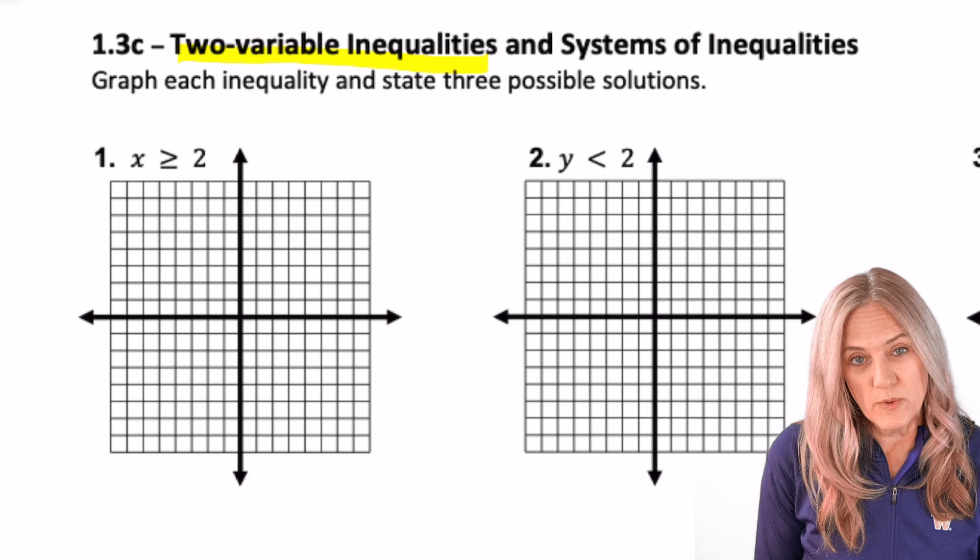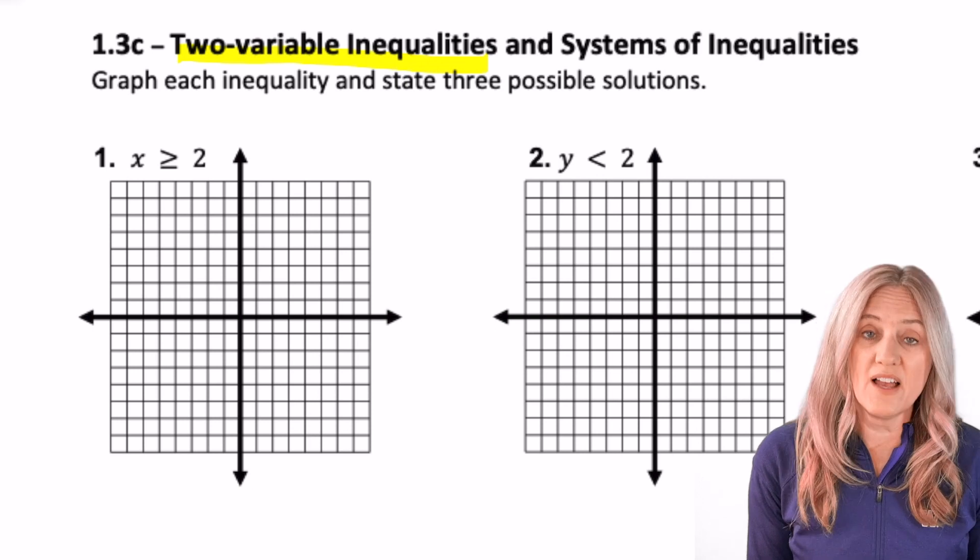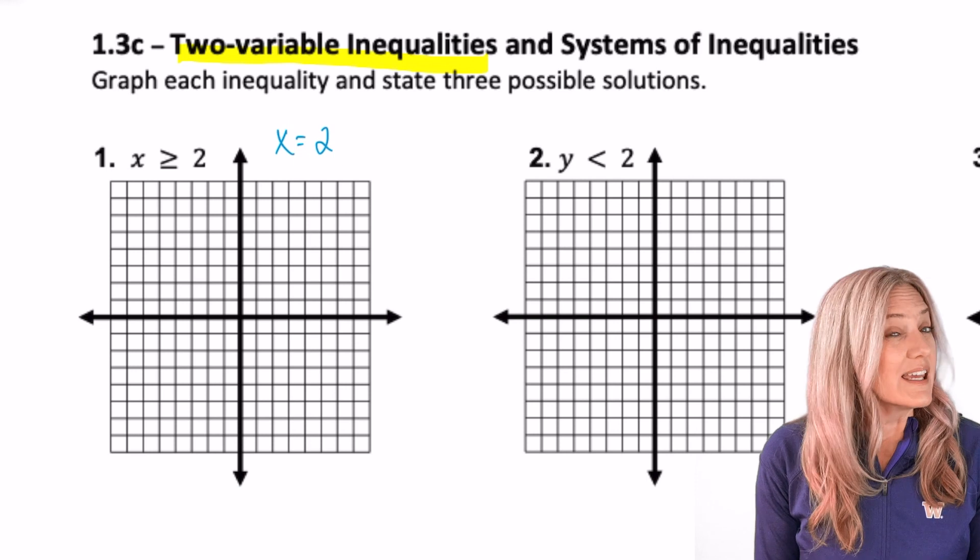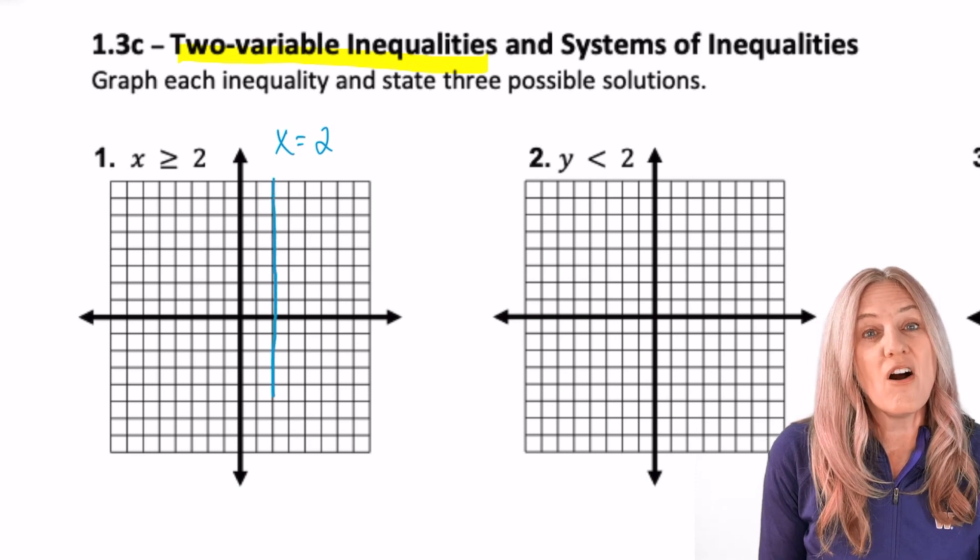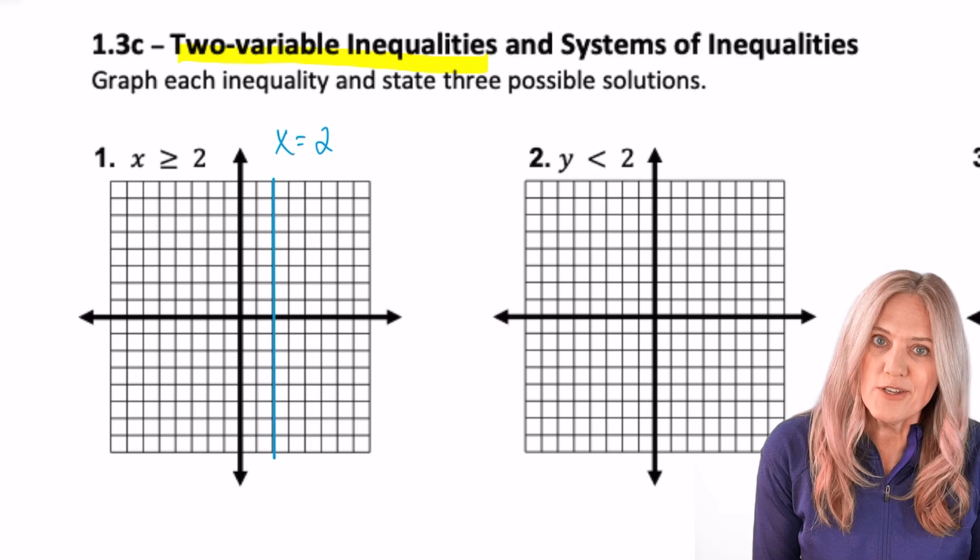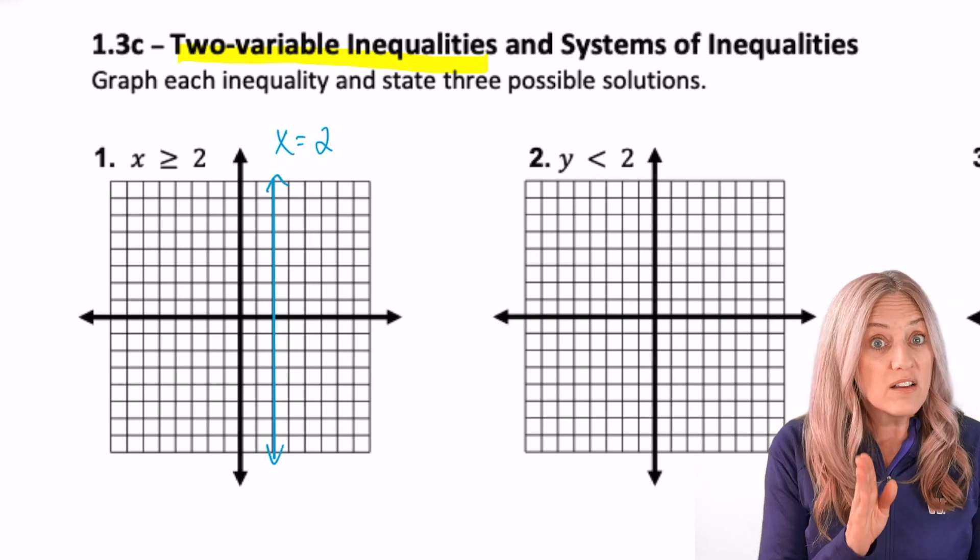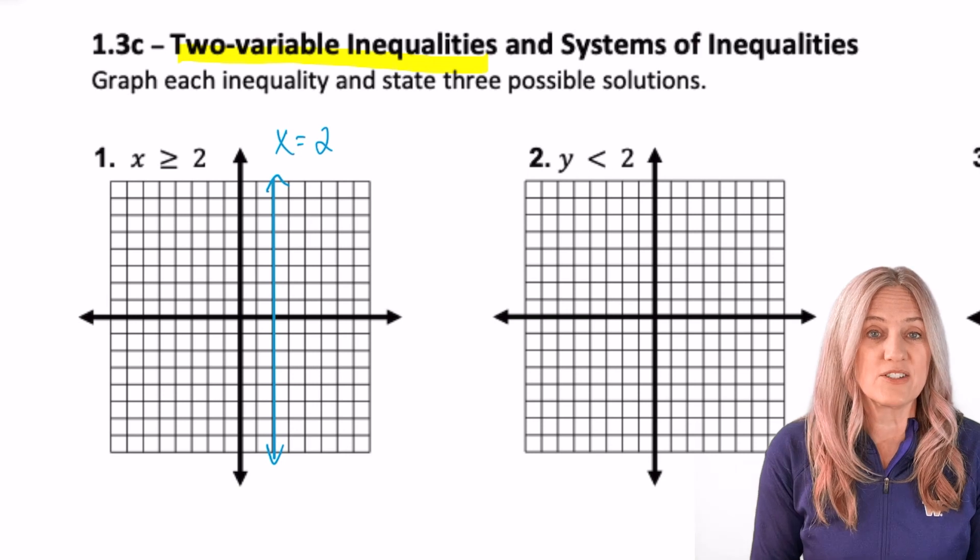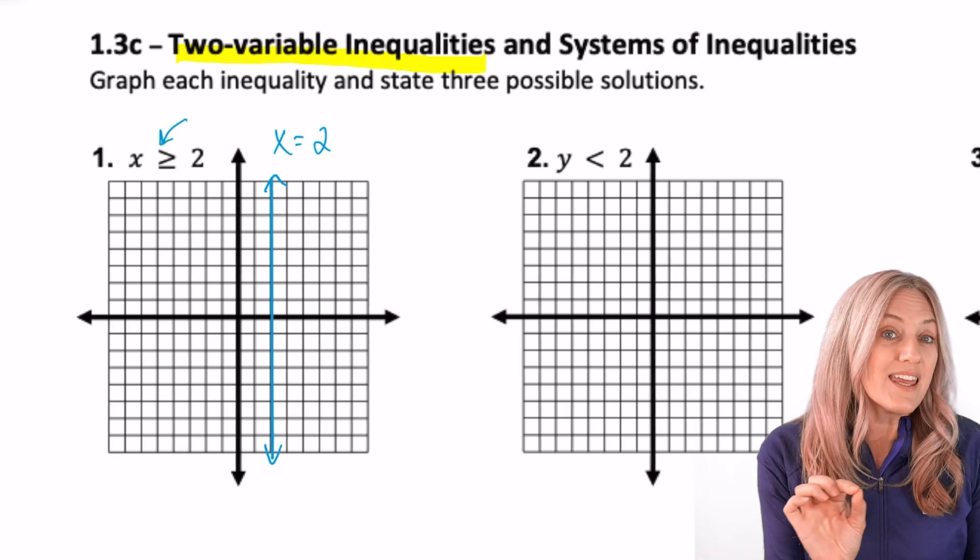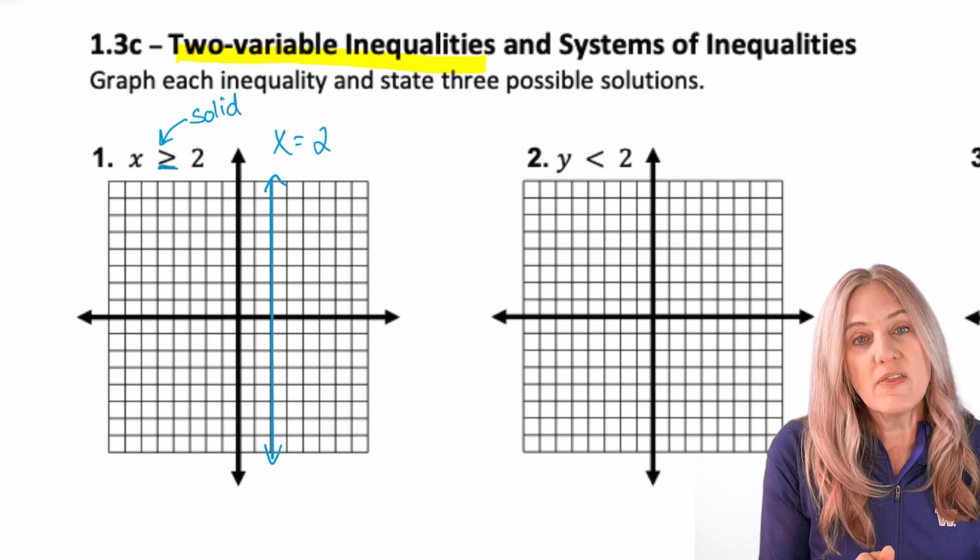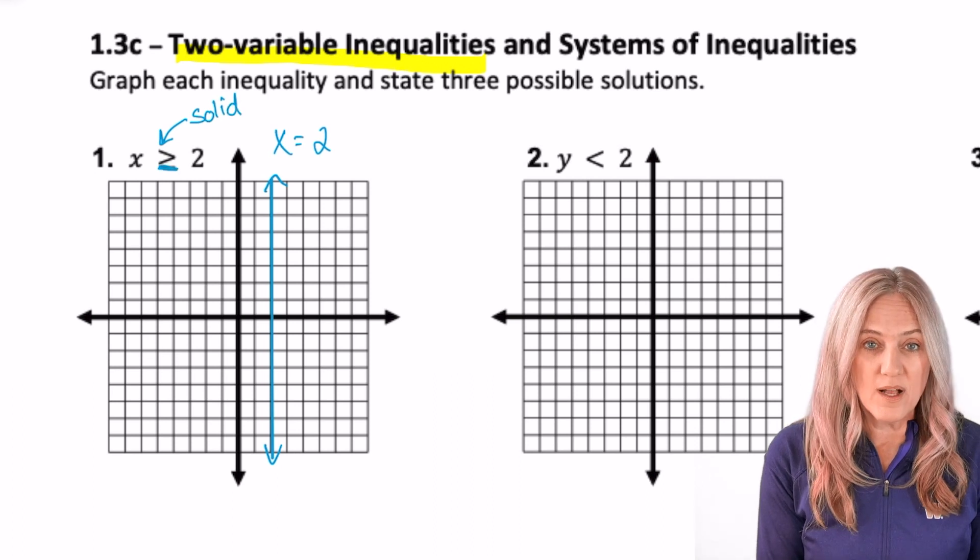X is greater than or equal to 2. Let's graph the line x equals 2. Remember that line x equals 2 means the set of points where all of the x coordinates are 2, so it's a vertical line. We also have to decide should we have a solid vertical line or should it be dashed? Because it says equal to, it will be solid, and any point on the line is a possible solution to this inequality.